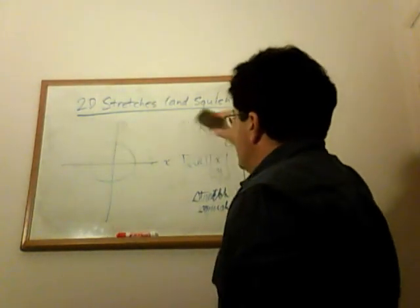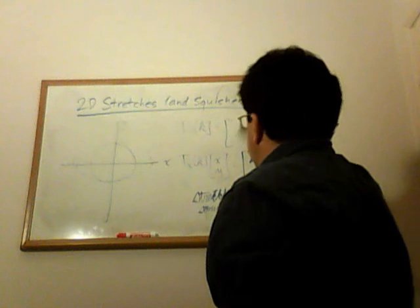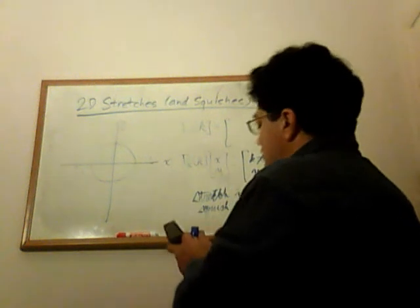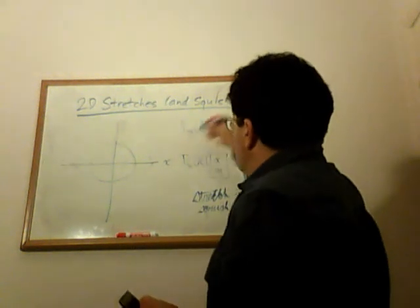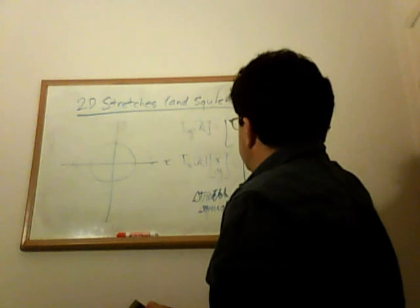So that's the stretch in the X direction, and then you can also do stretches in the Y direction. What that looks like is T_Y of K equals 1, 0, 0, K.